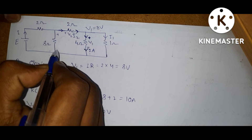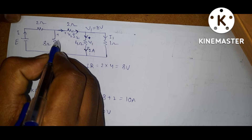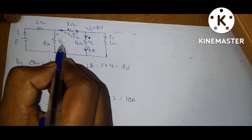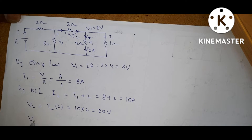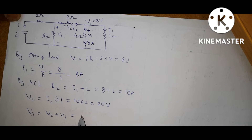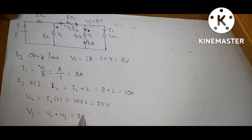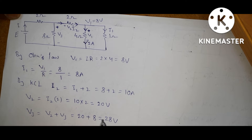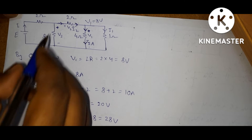Now the voltage across the 8 ohm — let it be V3. By KVL, what is V3? V3 is equal to V2 plus V1. V2 is 20 volts and V1 is 8 volts, so this is 28 volts.